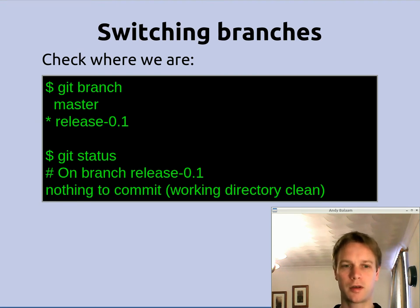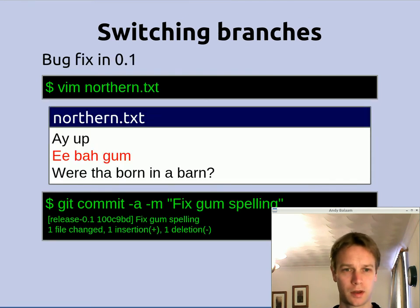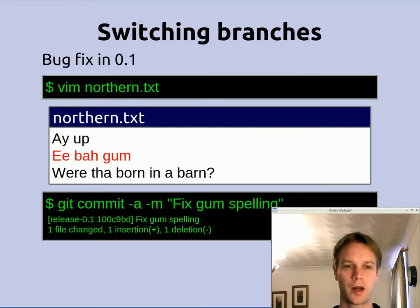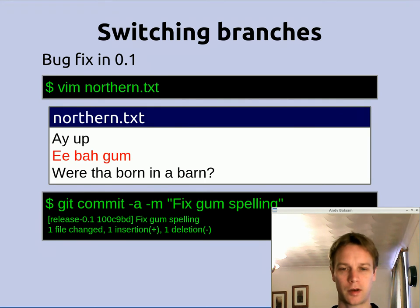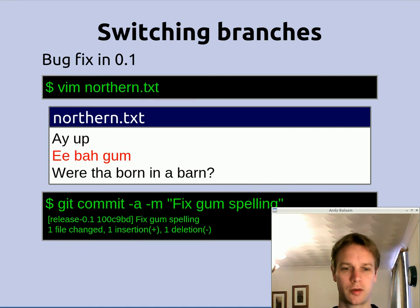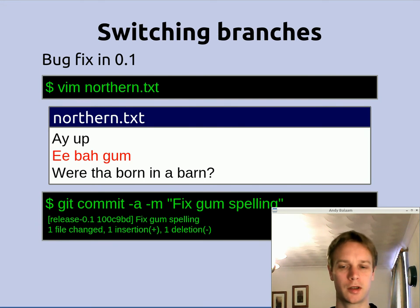So that's all very well — we can make a branch and switch between them — but at the moment our two branches are identical because we haven't made any changes. Let's imagine we have a bug we need to fix for our customer. We've released 0.1, given it to a customer, they've reported a bug and we need to fix it. So we modify northern.txt and change the spelling of 'ebargum' to the correct northern spelling, then commit that change. The command shown is a shorthand for git add and git commit together, passing the commit message on the command line. You'll notice the commit message tells you what branch you committed onto — it says release 0.1 — so you know you're making changes in the release 0.1 branch, which means when you switch back to master you won't see this change.